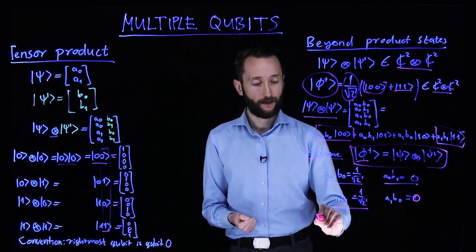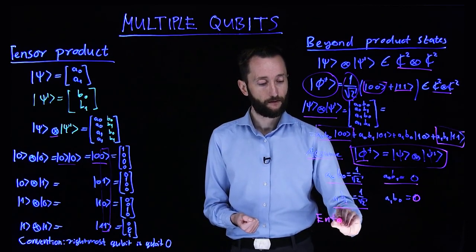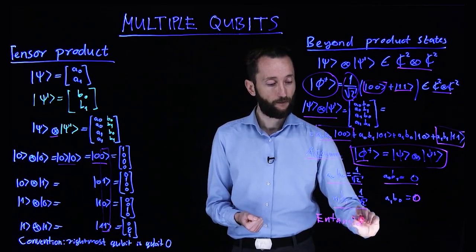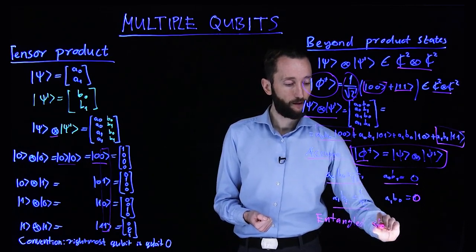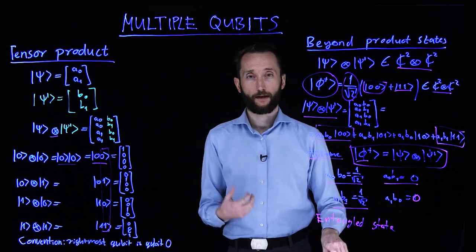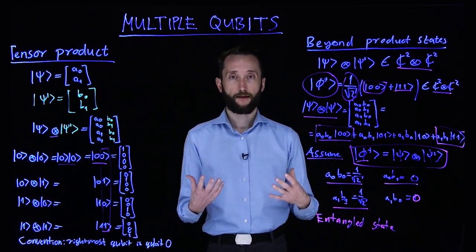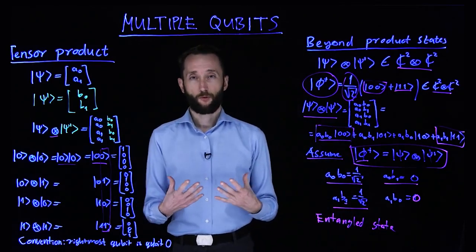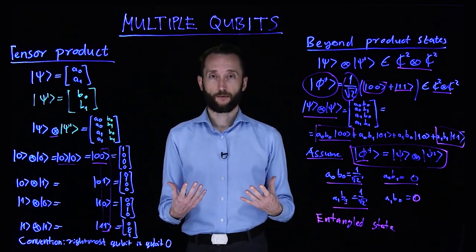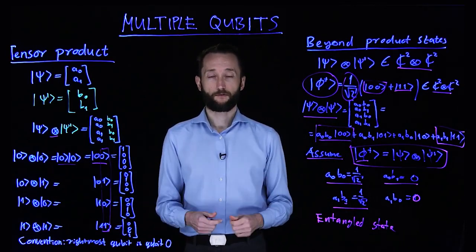Such states are called entangled states, and they play a very important role in quantum computing together with interference. So these are the main quantum mechanical properties that we exploit in quantum calculations, as you will see in subsequent lectures.